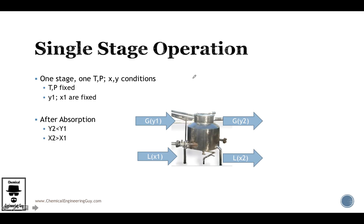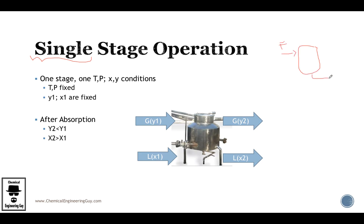So far we talked about the types of operation. Another kind of operation is to operate either in single or multiple stages. Let me explain what a single stage is — you probably know it by the flash. Remember those exercises in your mass balances classes where you had a feed and separated them into gas and liquid because the flash has equilibrium conditions at a given temperature and pressure.